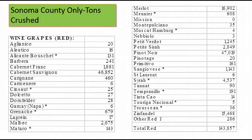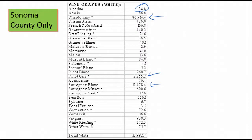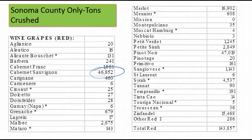Looking at red grapes in Sonoma County, the winner is Cabernet Sauvignon at 46,000 tons. Pinot Noir is huge in our county at 47,000 tons, actually higher than Cabernet — and I believe that's the first year that's been the case, though I'll go back and check prior-year numbers. So it's interesting that Pinot Noir is ahead of Cab last year.